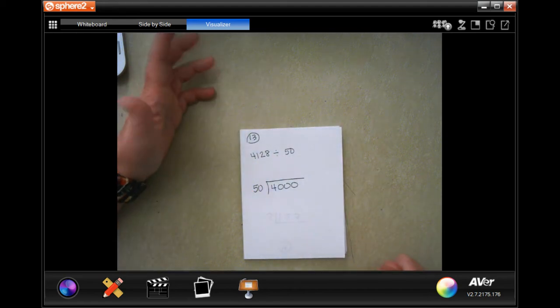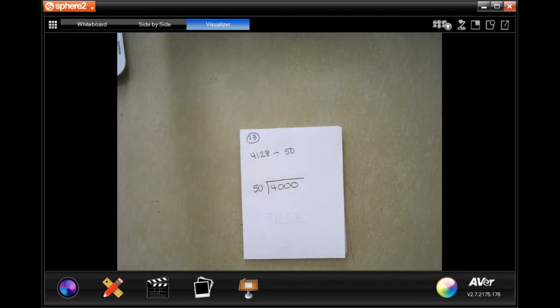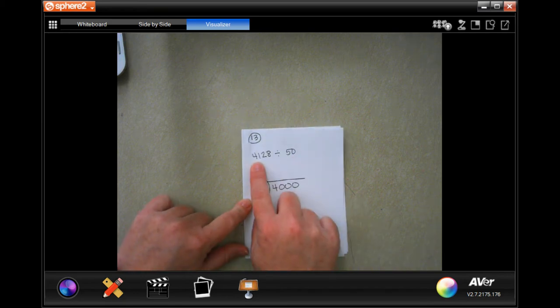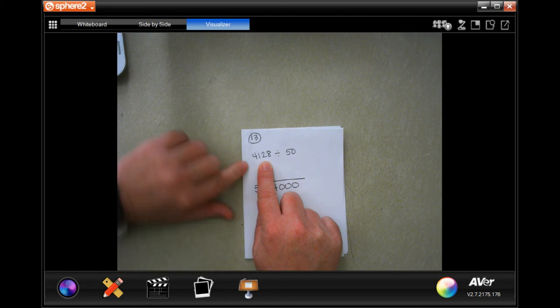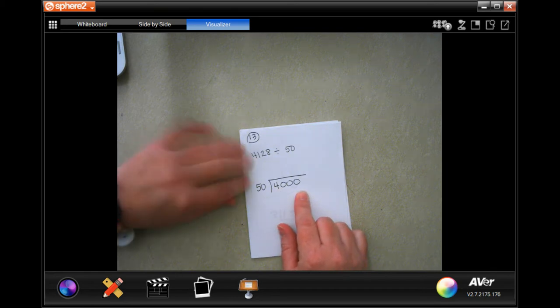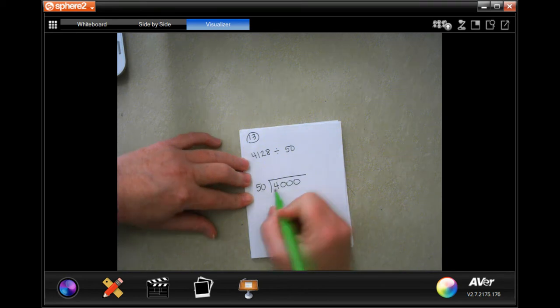Going down to number 13, it says a cubic yard of topsoil weighs 4,128 pounds. About how many 50-pound bags of topsoil can we fill with one cubic yard of topsoil? So I took my 50 and then I rounded, because it says about how many, so I rounded 4,128 to 4,000.